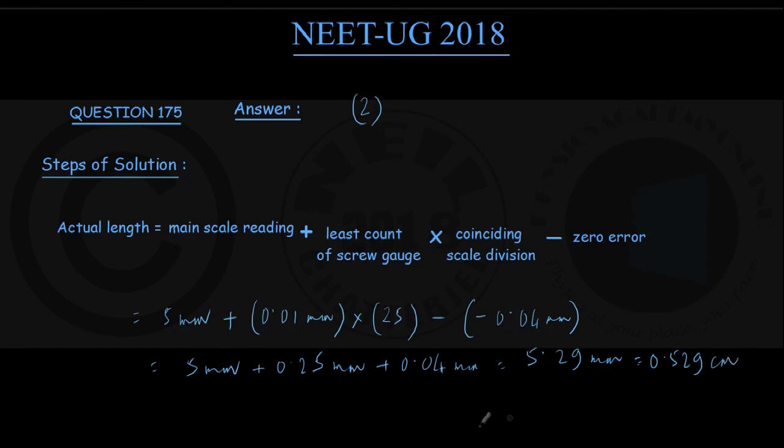Once we get this, we understand this is nothing but option number 2. So you choose option 2 as the correct option.